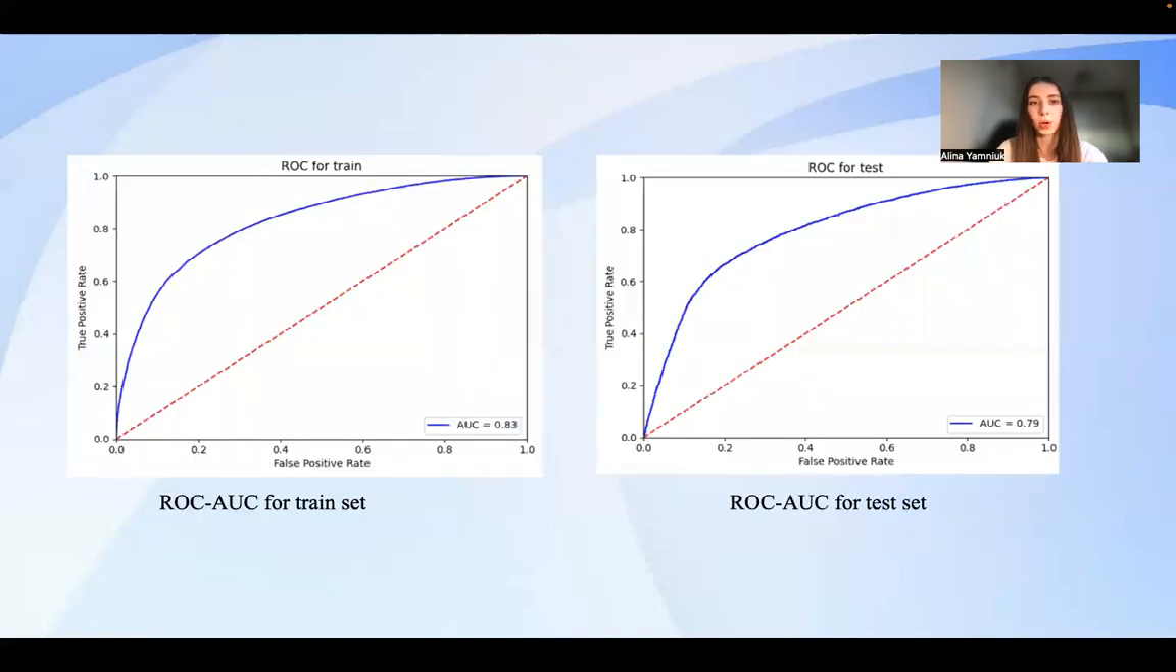Since the problem of binary classification has been solved, the most objective metric is the ROC-AUC, area under the ROC curve. The ROC curve provides detailed information about the behavior of the classifier. The curve is the result of the true positive rate and the false positive rate, depending on the threshold. As a result, the metric values are similar on the training and testing datasets, so the model is well generalized.